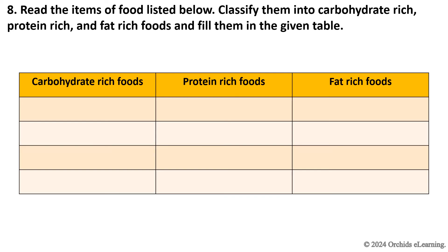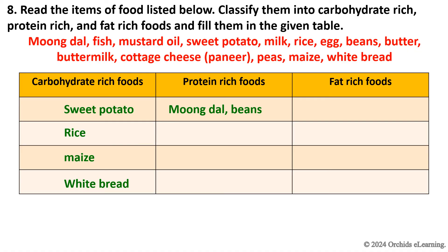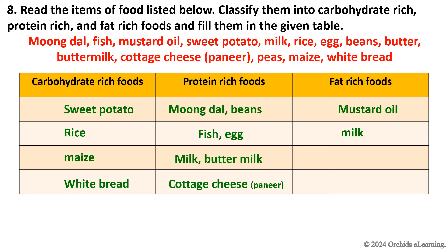Read the items of food listed below. Classify them into carbohydrate-rich, protein-rich, and fat-rich foods. Sweet potato, rice, maize, and white bread are carbohydrate-rich food items. Moong dal, beans, fish, egg, milk, buttermilk, and cottage cheese (paneer) are protein-rich food items. Mustard oil, milk, egg, and butter are fat-rich food items.